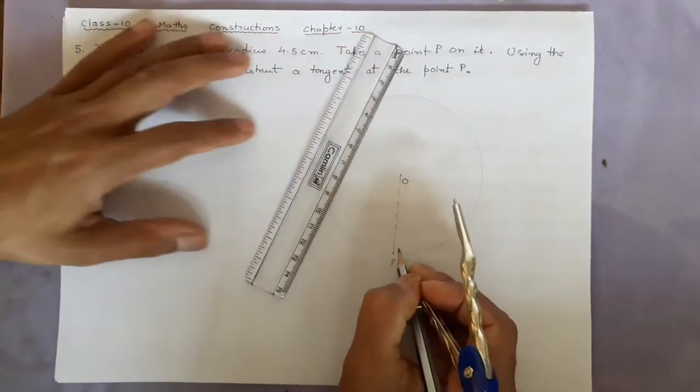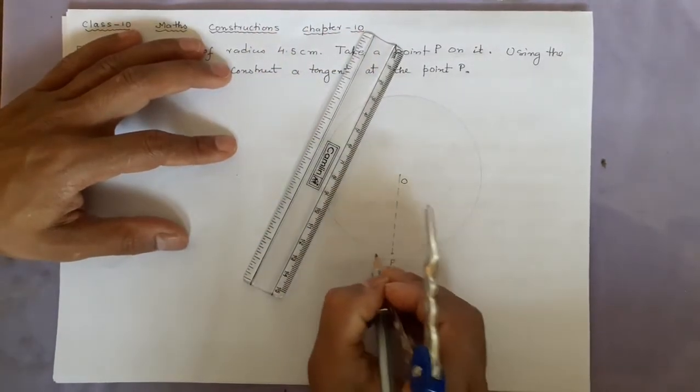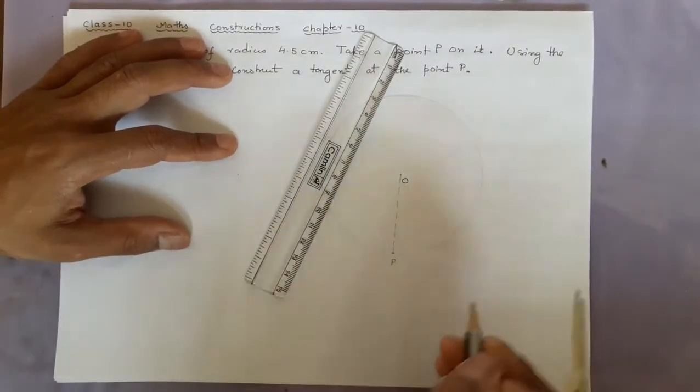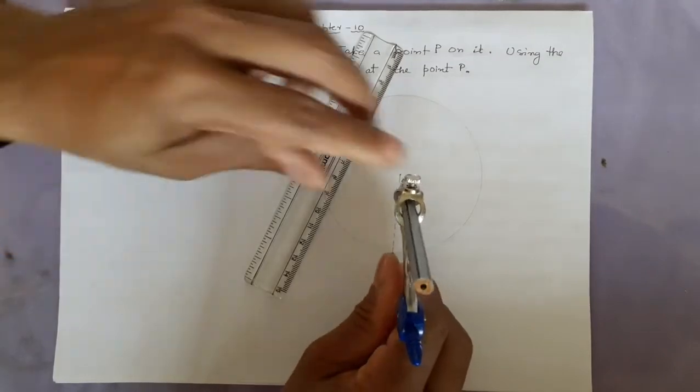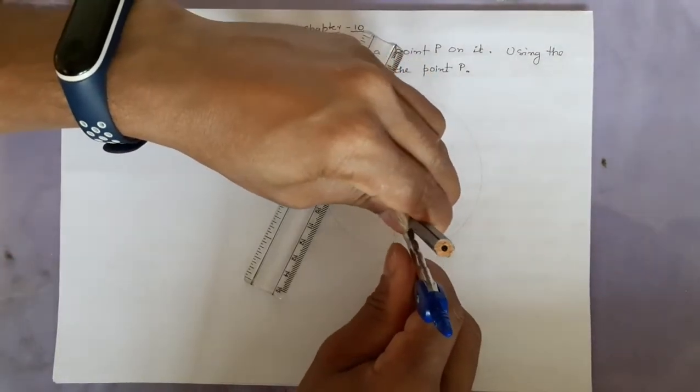Now we will use one principle: anything which is perpendicular to the radius will be a tangent. Radius and tangents are perpendicular, so I want to make a perpendicular on this radius. I am going a little faster because this was already done in construction 1, how to make 90 degrees.